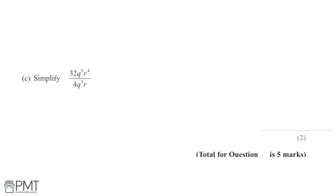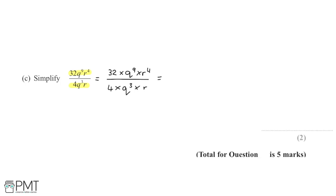Finally, we're asked to simplify 32 lots of q to the 9 r to the 4, all over 4 lots of q cubed r. We're working with a more complex expression involving a quotient, so there's going to be some division involved. To make it easier, I'm going to rewrite this fraction in a nicer form. The terms in the numerator and denominator are all multiplied together: 32 multiplied by q to the 9 multiplied by r to the 4, over 4 multiplied by q to the 3 times r.